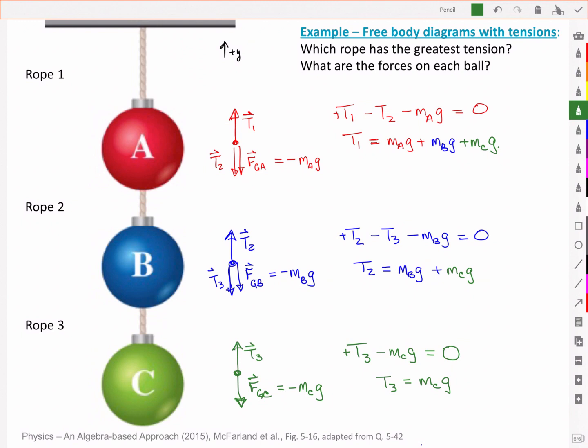The middle tension is supporting just the weight of the lower two, and the bottom tension is supporting the weight of just the bottom bauble, the green bauble. And all of them have a net force equal to zero. They're not moving, they're hanging in equilibrium.